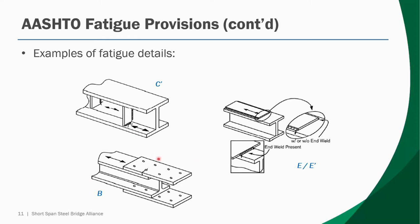There are similar details for other elements relevant to short-span steel bridge design. For instance, a splice connection splice plate would be assessed according to a category B detail. Welded cover plates have some of the worst fatigue ratings — specifically an E or E prime rating — and as a result, we recommend avoiding end-welded cover plates whenever possible. In E-SPAN 140, the free design resource available for practicing engineers for preliminary designs, we never utilize end-welded cover plates, one reason being their low fatigue category rating.